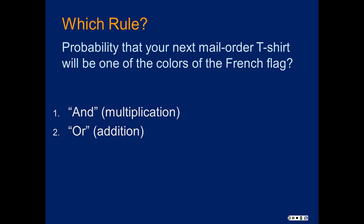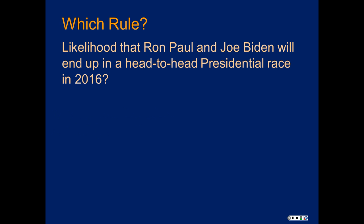The answer is OR — because these are going to be disjoint things. Your t-shirt is not going to be all the colors at once. We're actually saying: what's the probability that it will be red, or it will be blue, or it will be white? So that's OR — you add the probabilities.